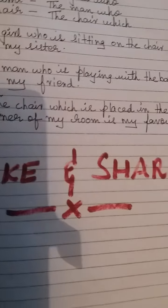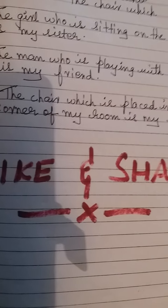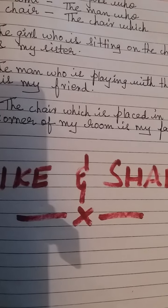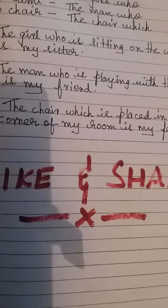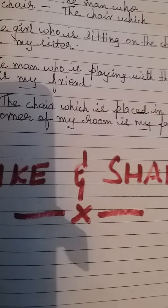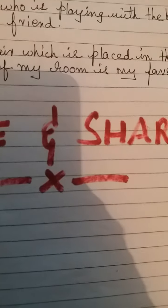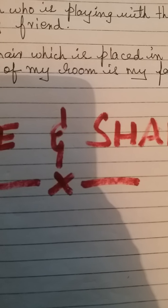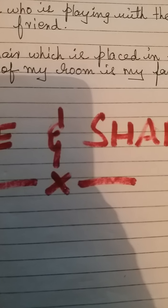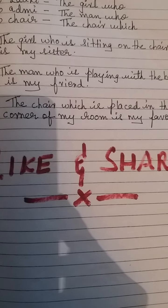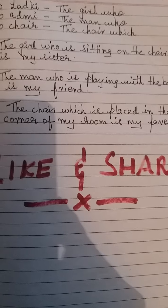In today's class, we studied relative clauses, which function like adjective clauses. When we need to define a noun, we add an adjective. I also taught you about two types of relative clauses — defining and non-defining — where defining is subject-based and non-defining is object-based. In a subject relative clause, you cannot skip it, but in an object relative clause, you can. I hope you understood. Please like, share, and subscribe to my channel. Thank you.